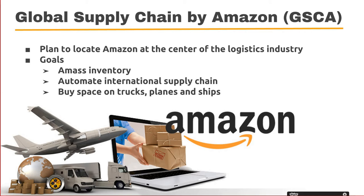Imagine a reality with one-click ship for seamless international trade and shipping. Global Supply Chain by Amazon is that world. In a 2013 report to Amazon senior managers, it detailed a plan to create a global delivery network that controls the flow of goods from factories in China and India to customers' doorsteps in Atlanta, New York, and London. This plan would locate Amazon at the center of the logistics industry. Global Supply Chain by Amazon's ambitions are to amass inventory, automate the entire international supply chain, and buy space on trucks, planes, and cargo freighters at reduced rates. The savings from automating logistics and purchasing discounted cargo space will then be passed on to customers, providing an additional competitive edge for Amazon.